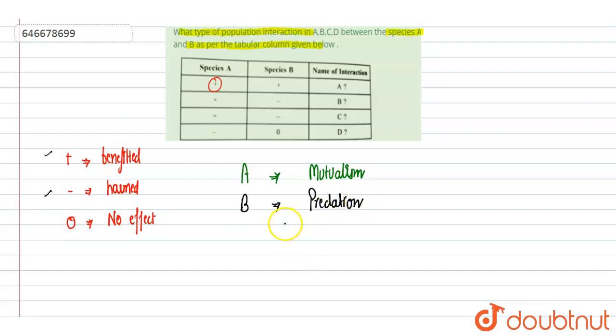In case of predation, there is one that is the predator which feeds on the prey. The predator gets benefited, while the prey is being eaten by the predator, so that is harm for the prey. So species A is the predator, prey is species B because it is negative.